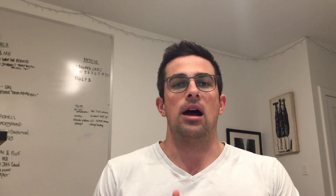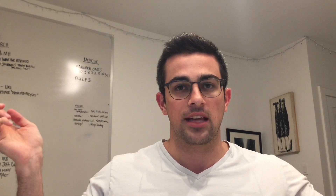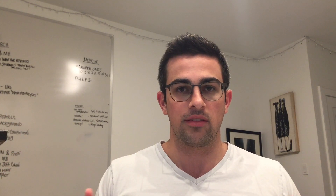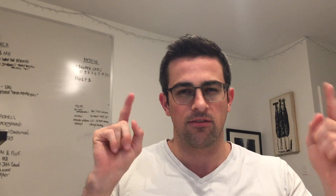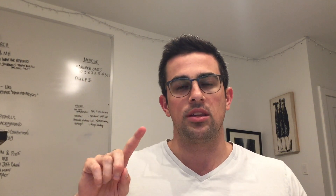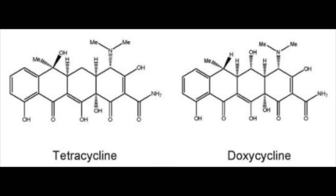Some brief background on tetracyclines: structurally, they are all four-ring structures that look pretty similar, with different methyl group configurations on the upper two rings. You can see these differences in the structures shown here.